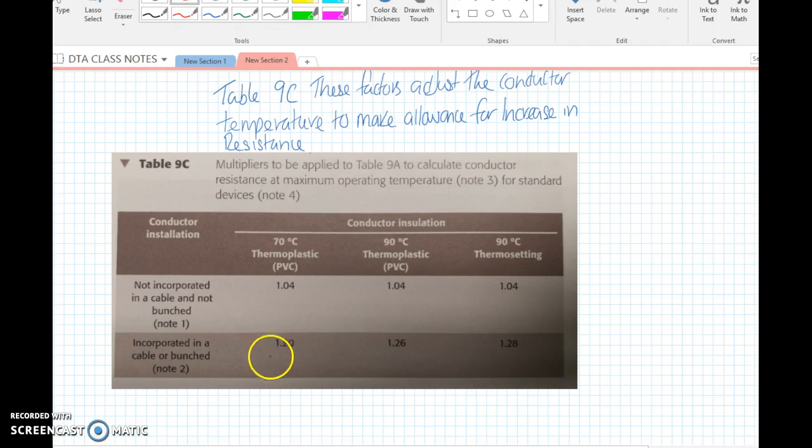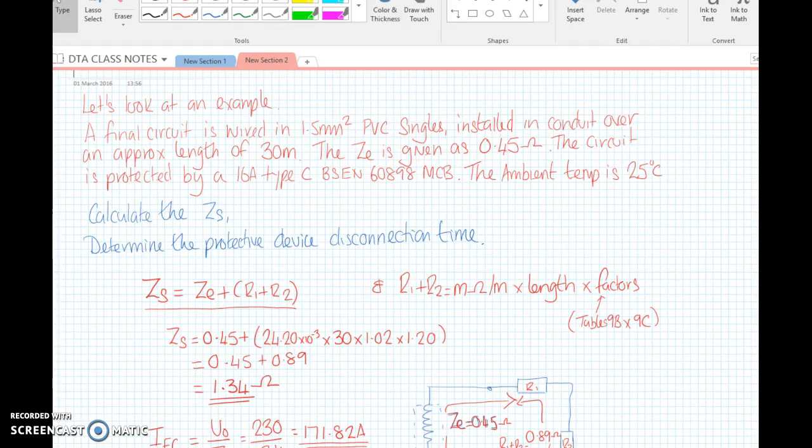During normal operating conditions we can actually lift that value of resistance by using these factors. The most common cable would be 70 degrees C. If it's incorporated in a cable or bunched in a conduit, normally the factor would be 1.2. If it's just singles that are well spaced, we get a lower factor.